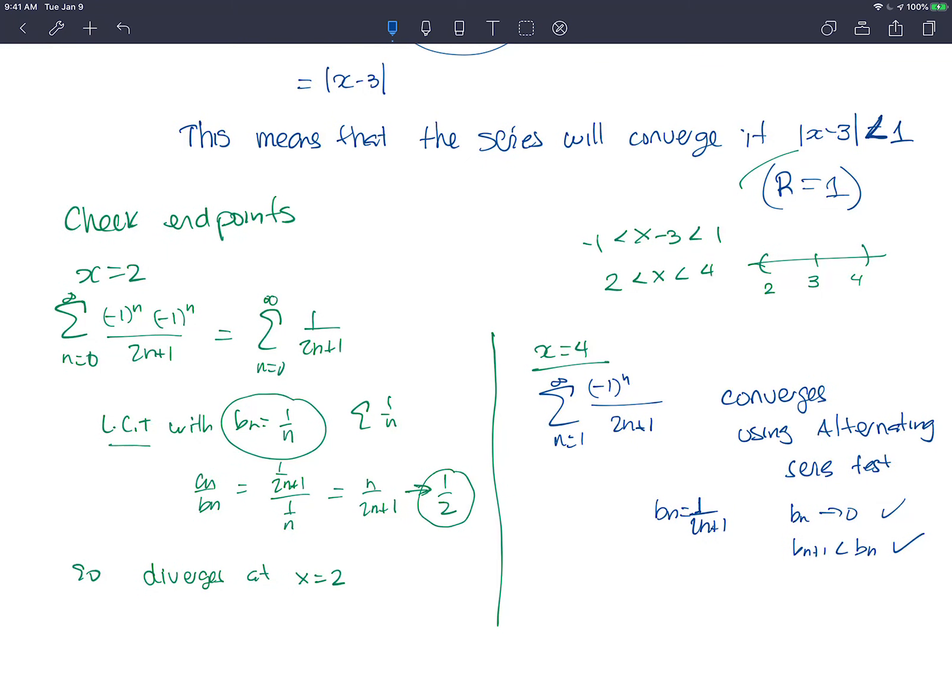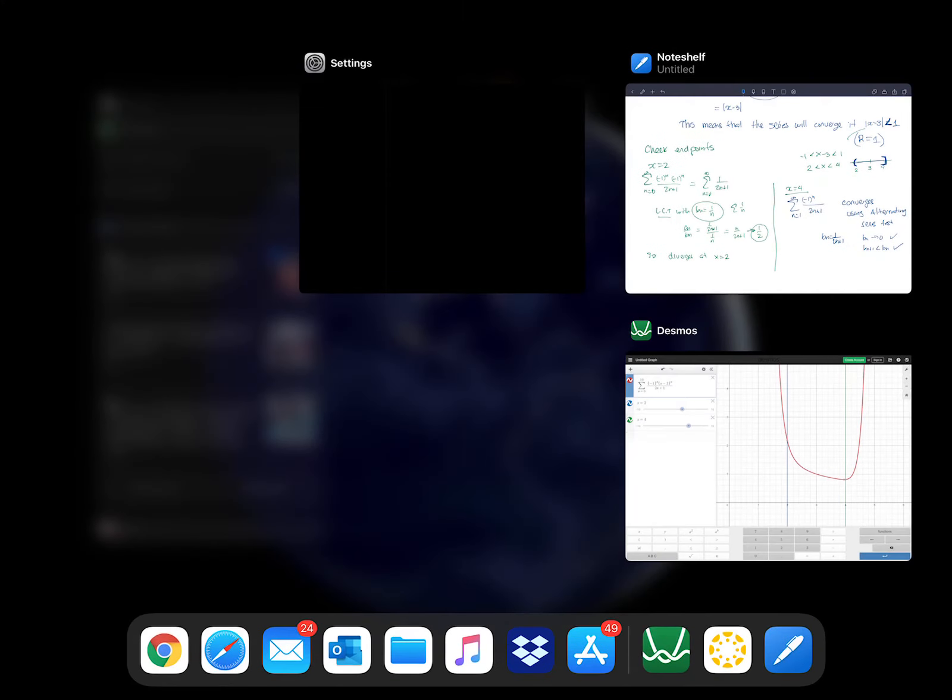Okay, so it converges at 4, it does not converge at 2. So we know now it was like this and like that. That's my interval of convergence.